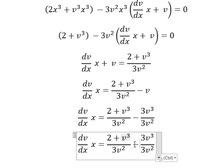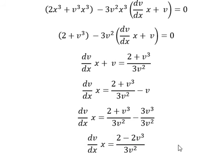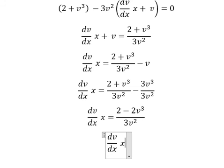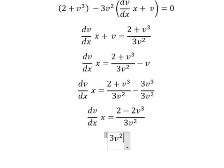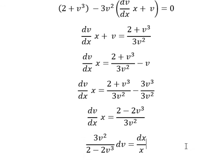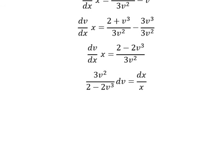So this one minus this one gives us negative 2v to the power of 3. I will move ds to the left and s to the right. Next we apply integration to both sides.